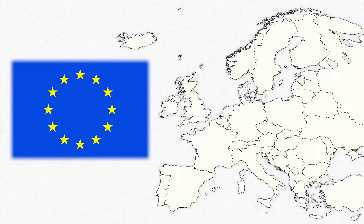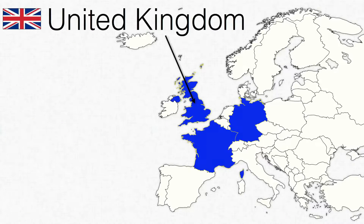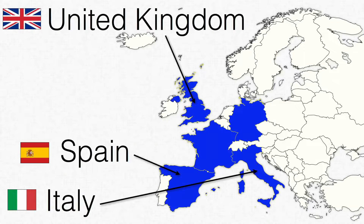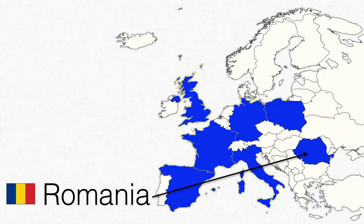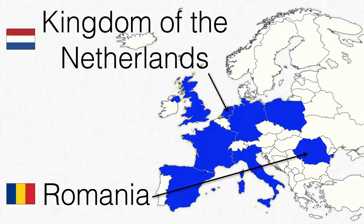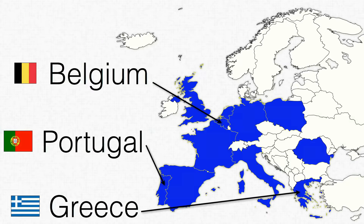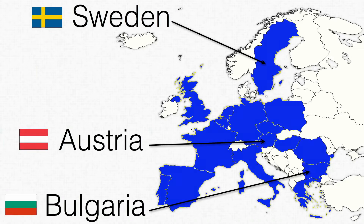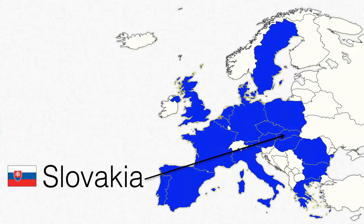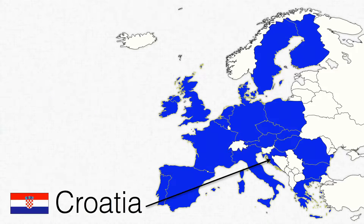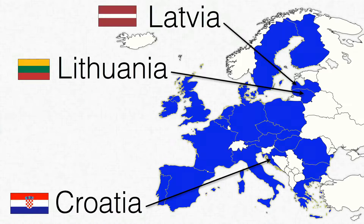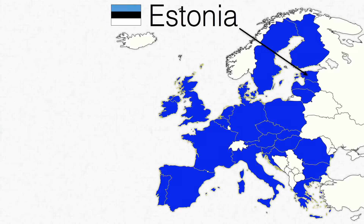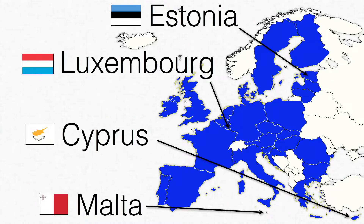The official members of the European Union in decreasing order of population are: Germany, France, United Kingdom, Italy, Spain, Poland, Romania, Kingdom of Netherlands, Greece, Belgium, Portugal, Czech Republic, Hungary, Sweden, Austria, Bulgaria, Denmark, Slovakia, Finland, Ireland, Croatia, Lithuania, Latvia, Slovenia, Estonia, Cyprus, Luxembourg, and Malta.